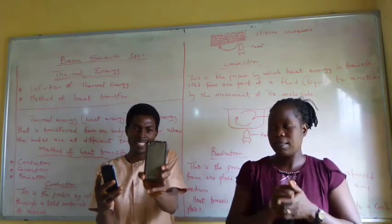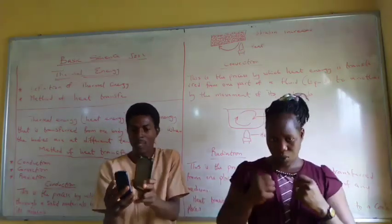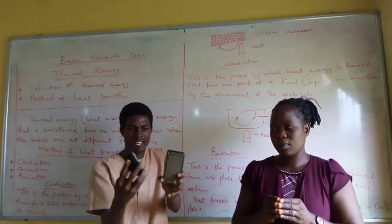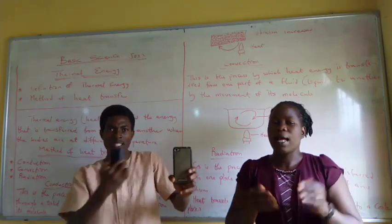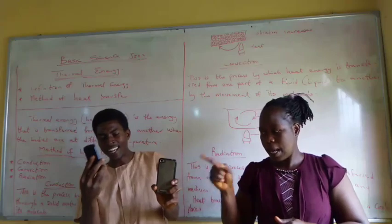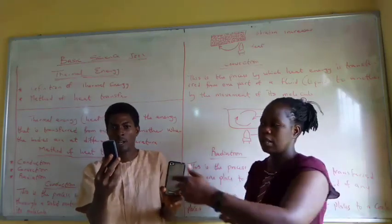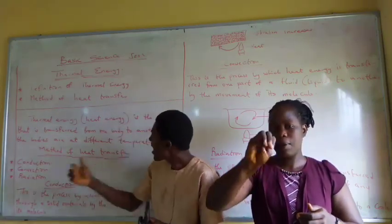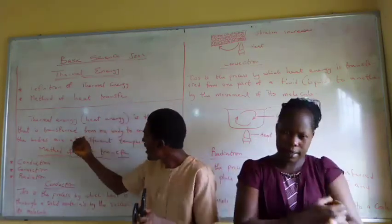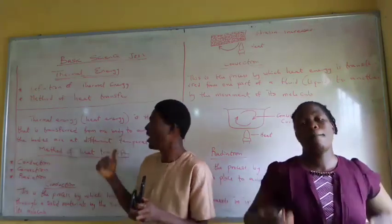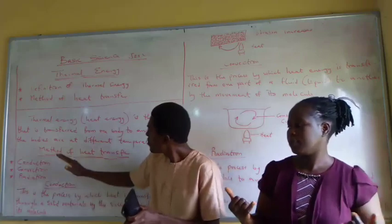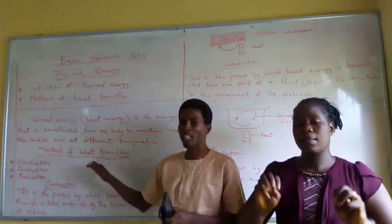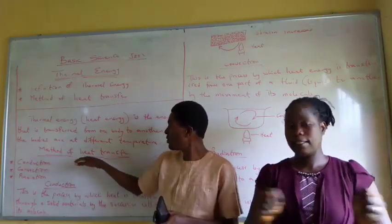The rate of hotness of the hot one is reduced, and the rate of coolness of the cool one is increased. The coolness will attract the hotness from the hot object so that at the end of the day it becomes hot as well. So that is thermal energy — the transfer of energy from one body to another. Now the next topic is the method of heat transfer.